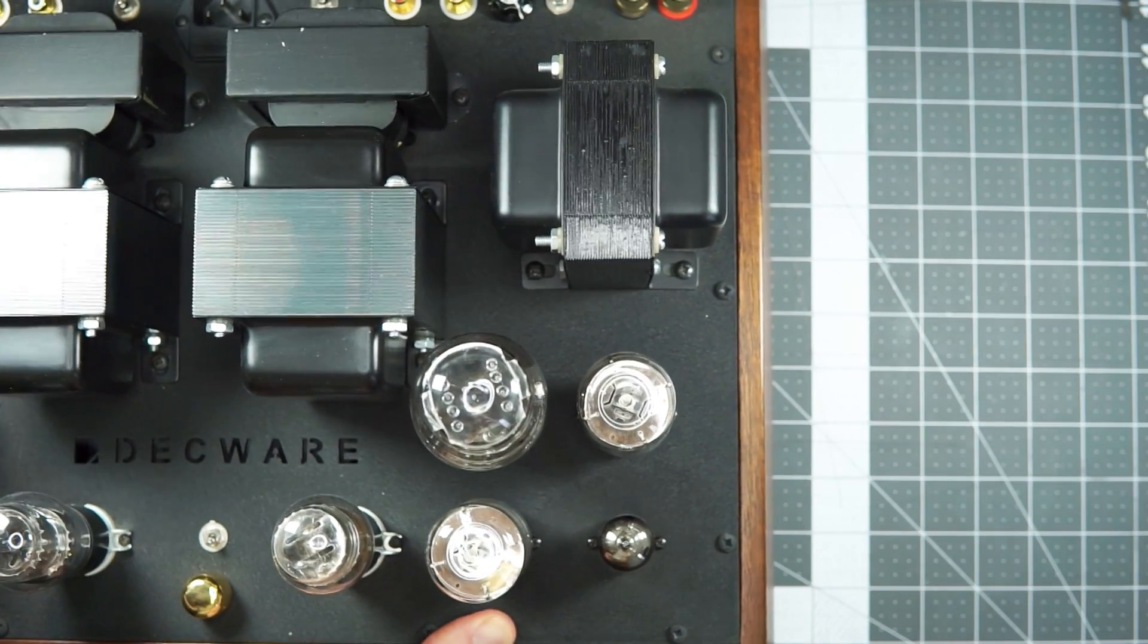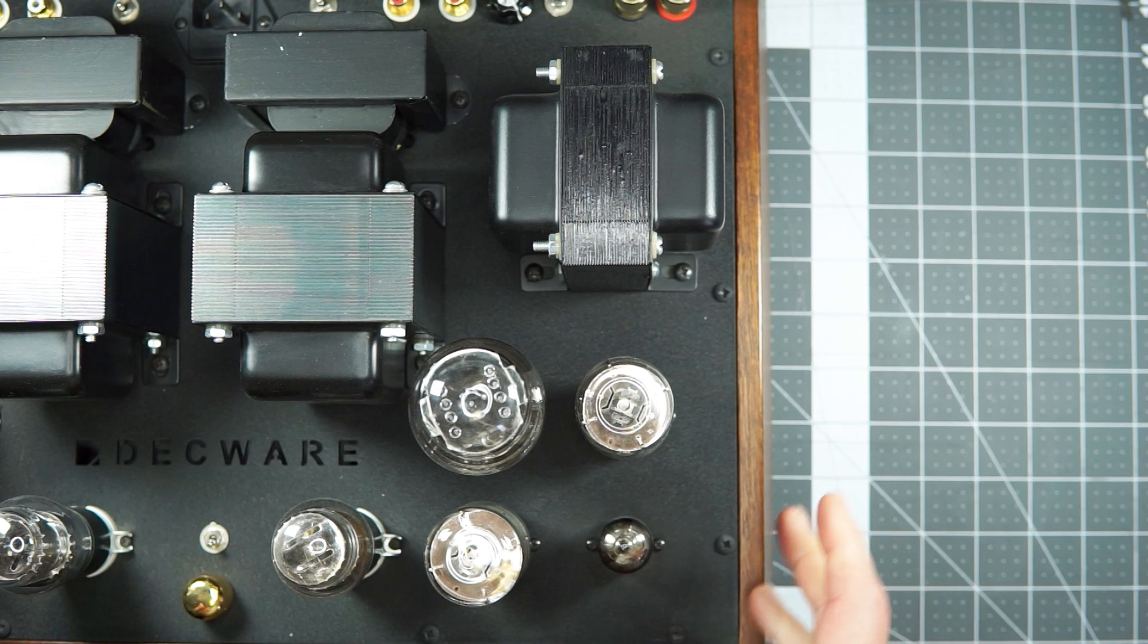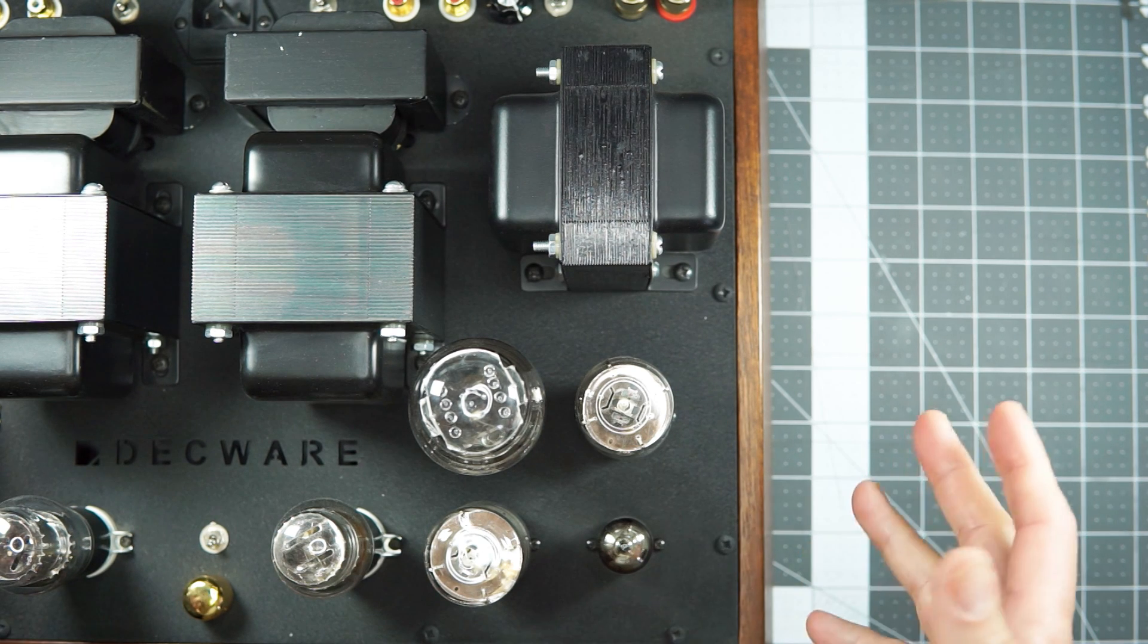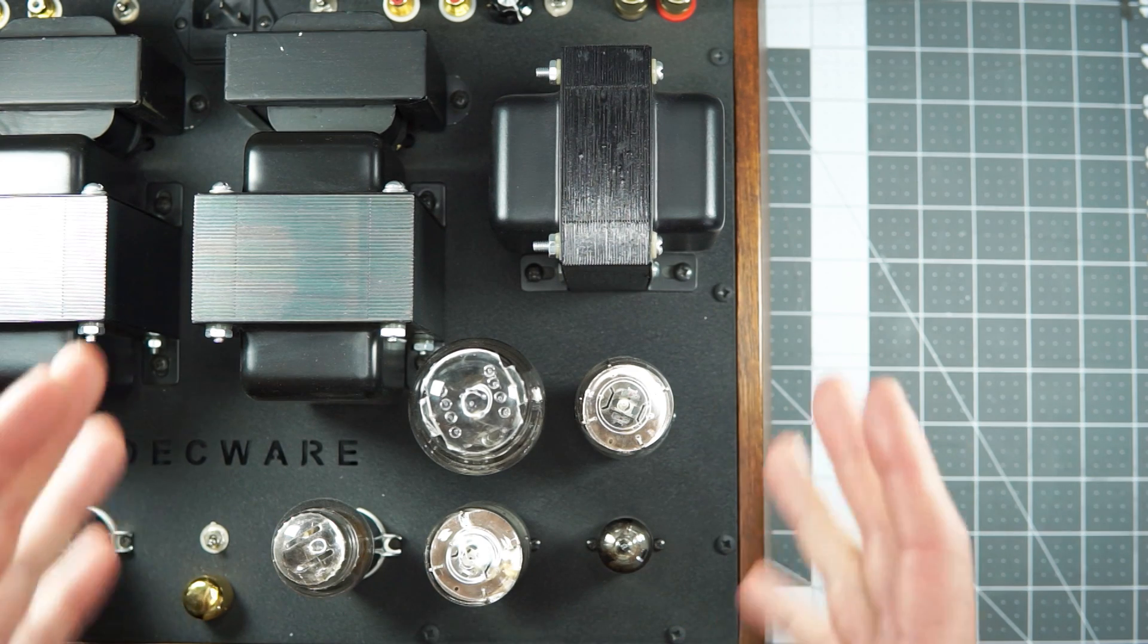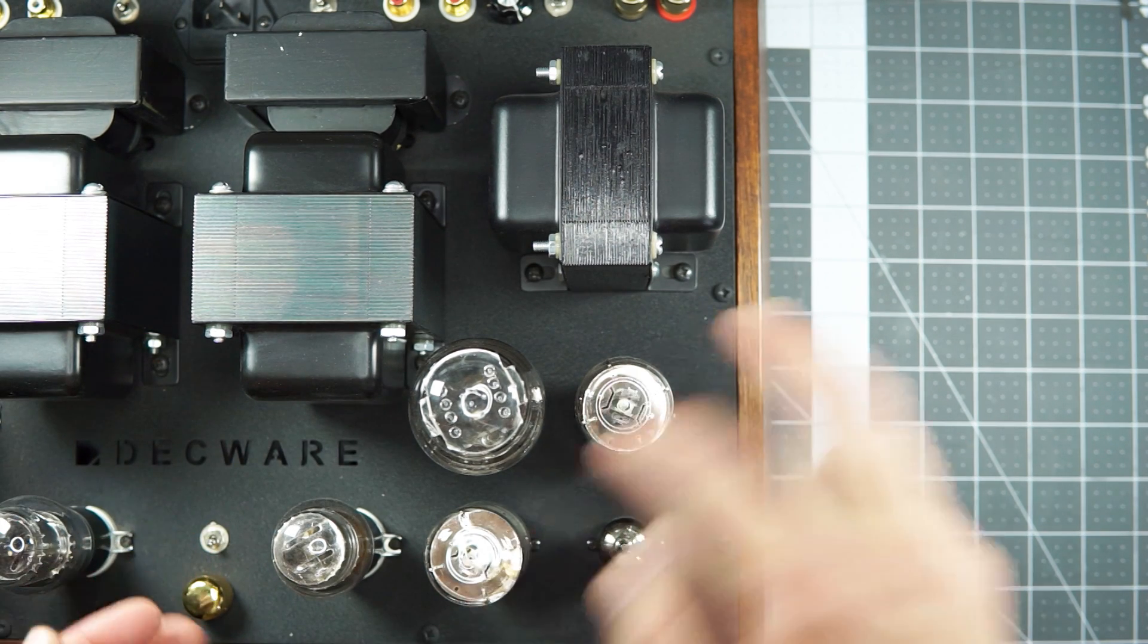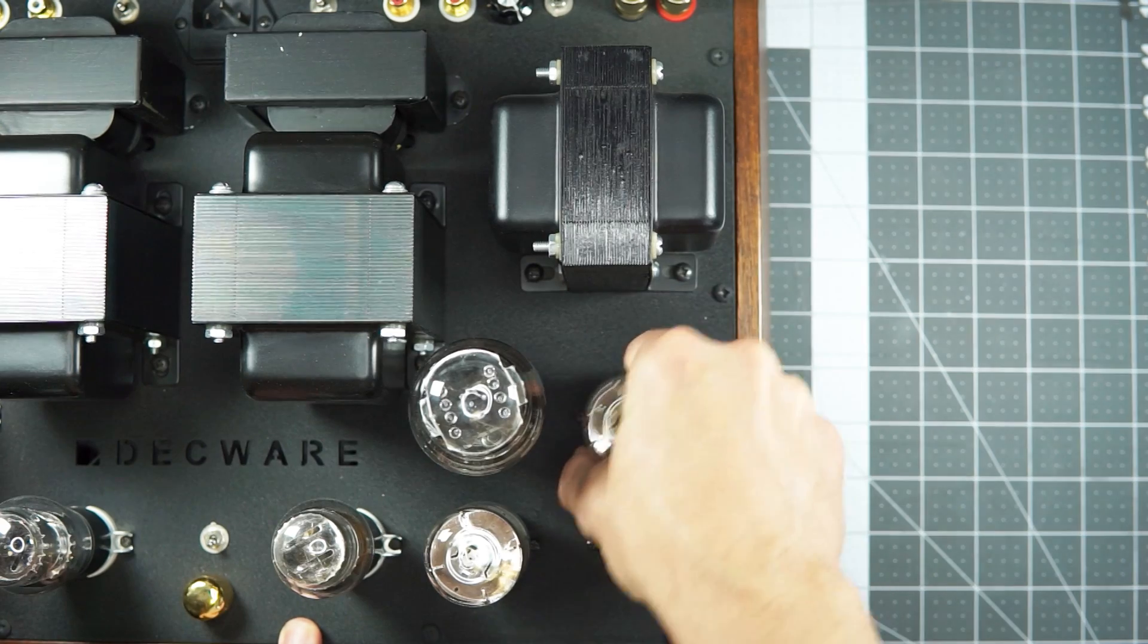All right. So this is a Decware Torii, again speaker only amp, but it's my example for push-pull here. So look at all these tubes. So now you have two power tubes and these are triodes.